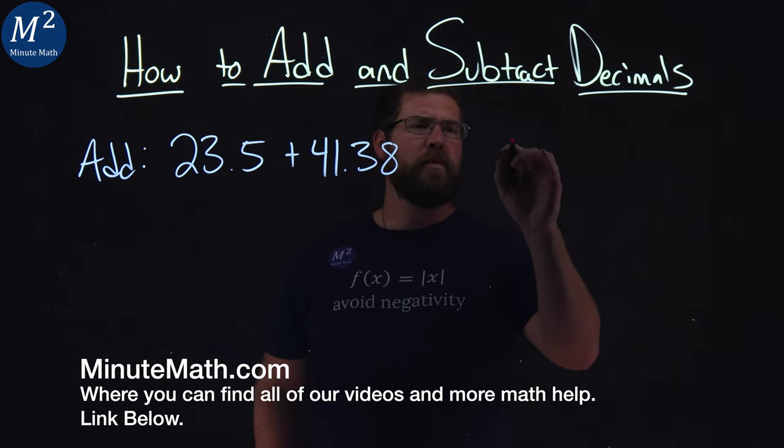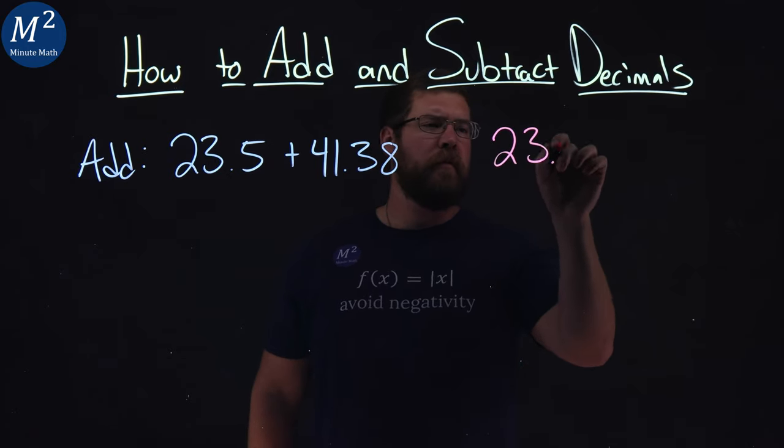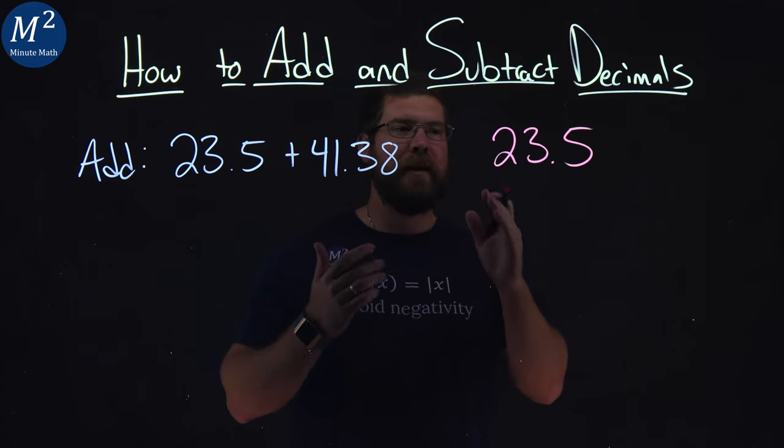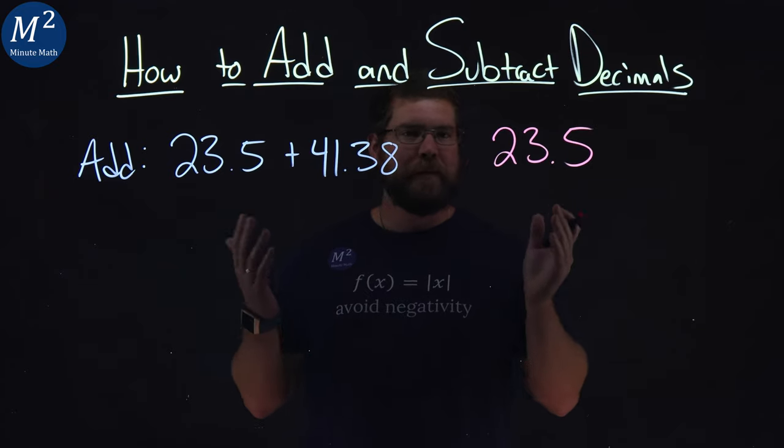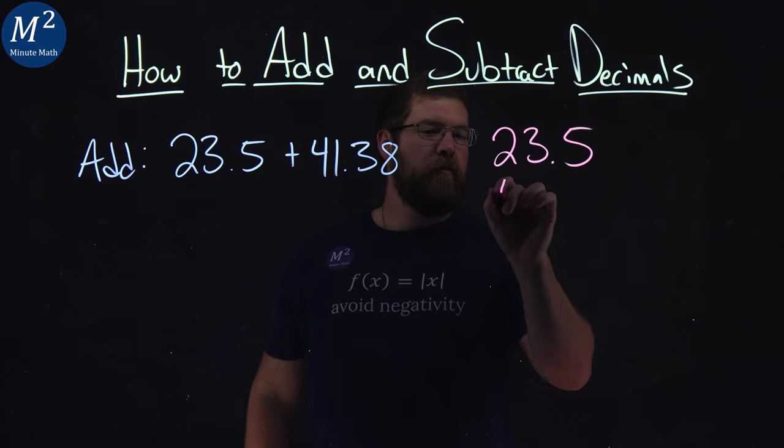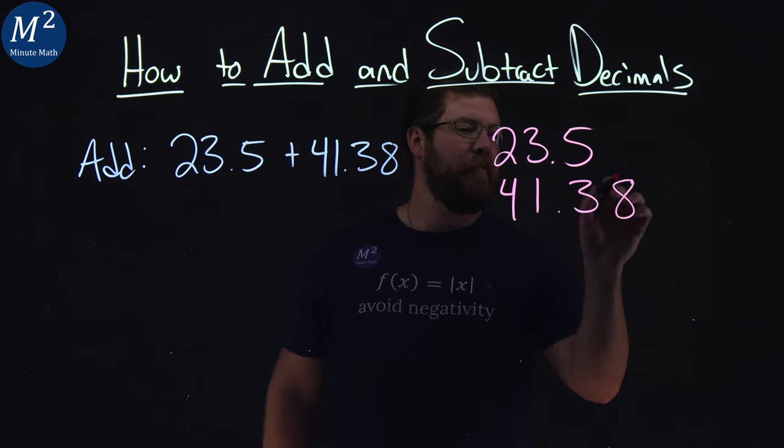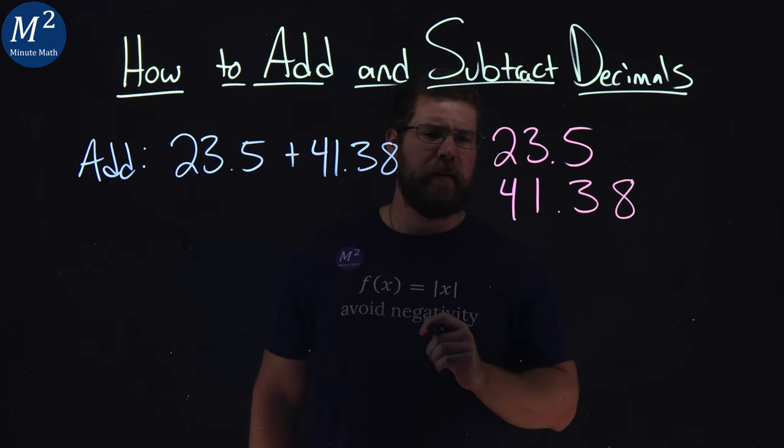Let's start with our 23.5. Underneath it, we're going to write our 41.38 and line up all of our place values. 41 goes right here, 3 under the 5, and then we have an 8 over to the right.